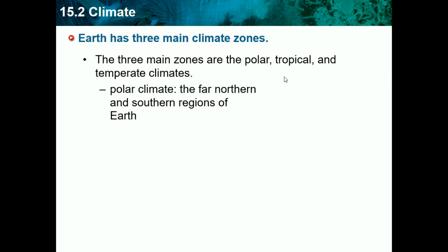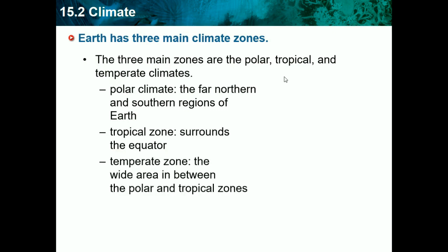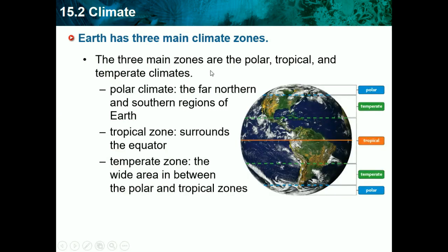Polar climates are in the far north and far south — the north and south poles. The tropical zone is everything surrounding the equator. The temperate zone is in the wide area between the polar and tropical zones, so basically everything else. Looking at the diagram, we have the two poles with polar climates, the equator which is tropical — everything around South America and Central America — and then the temperate zone from that line to the poles, which is basically average, normal weather: not too hot, not too cold.